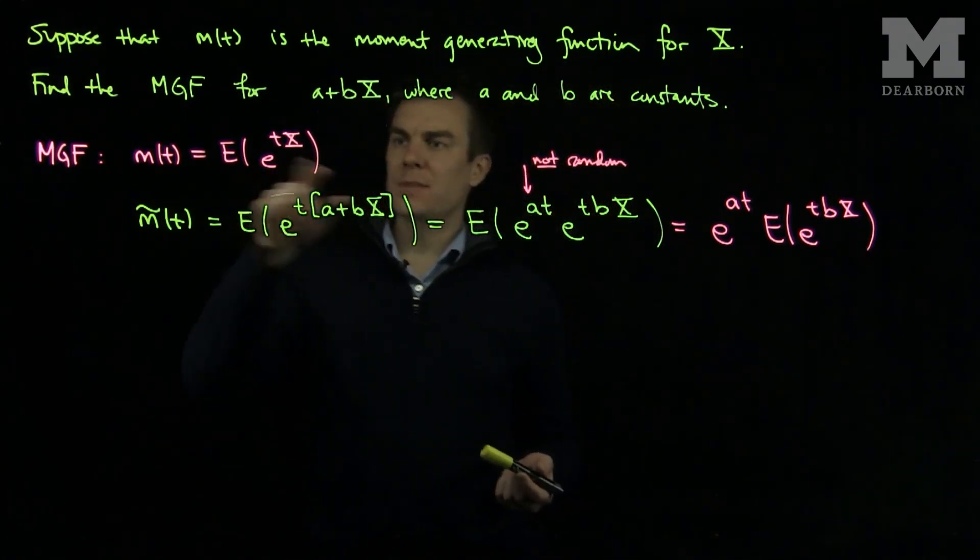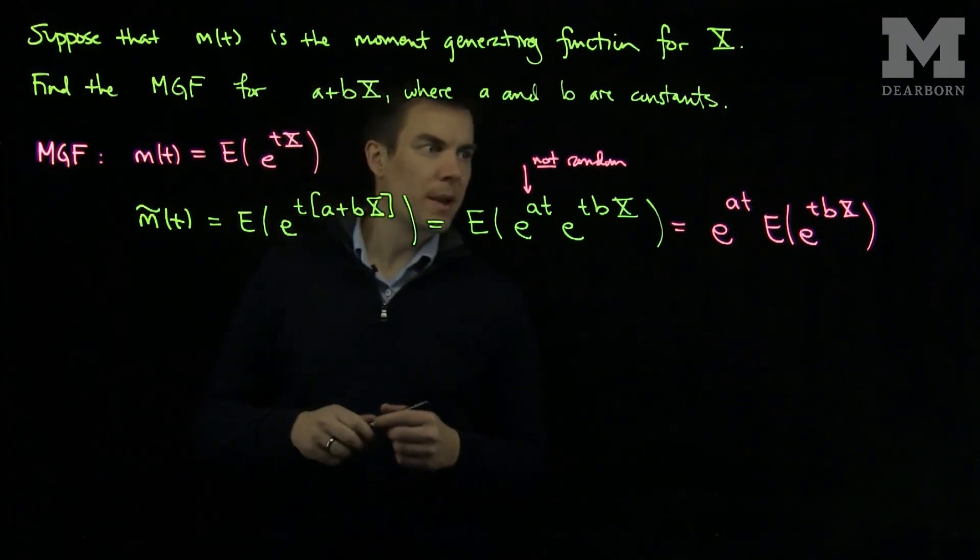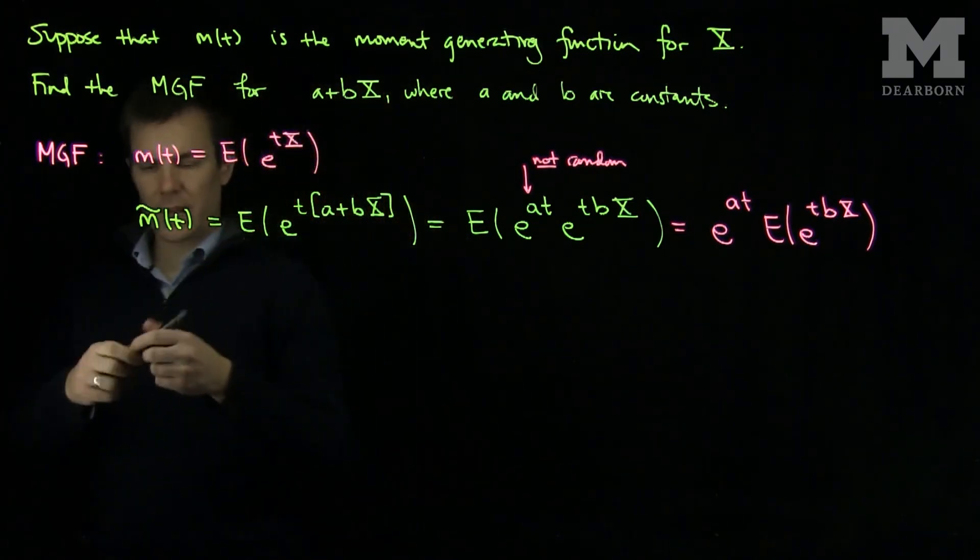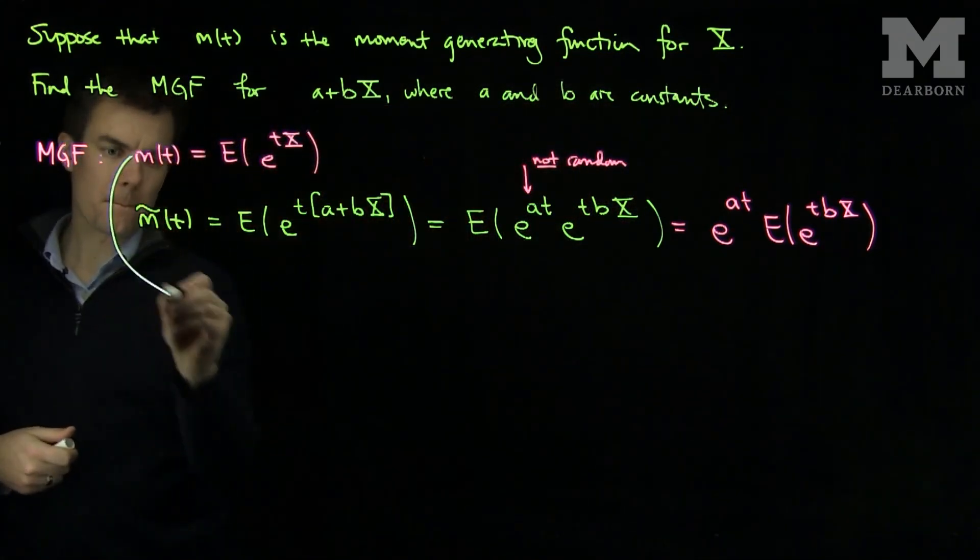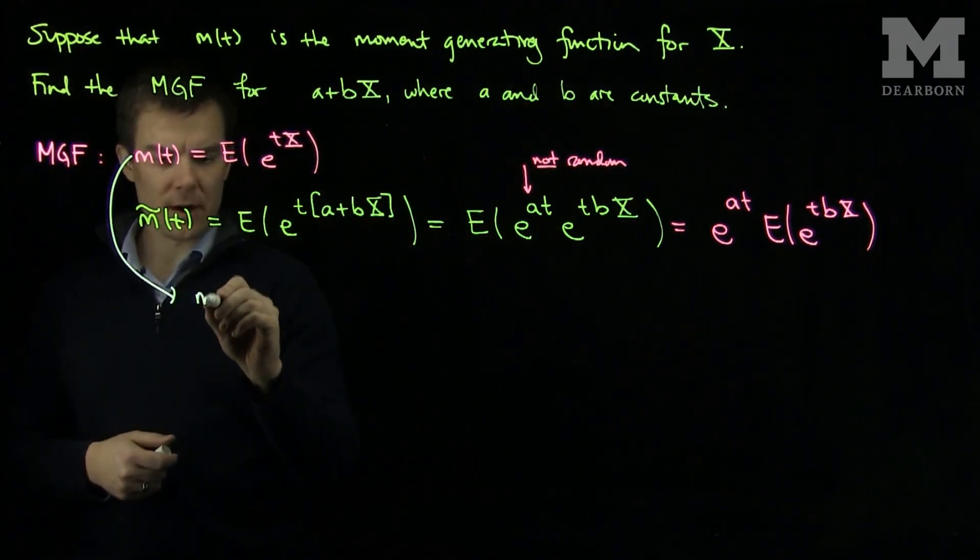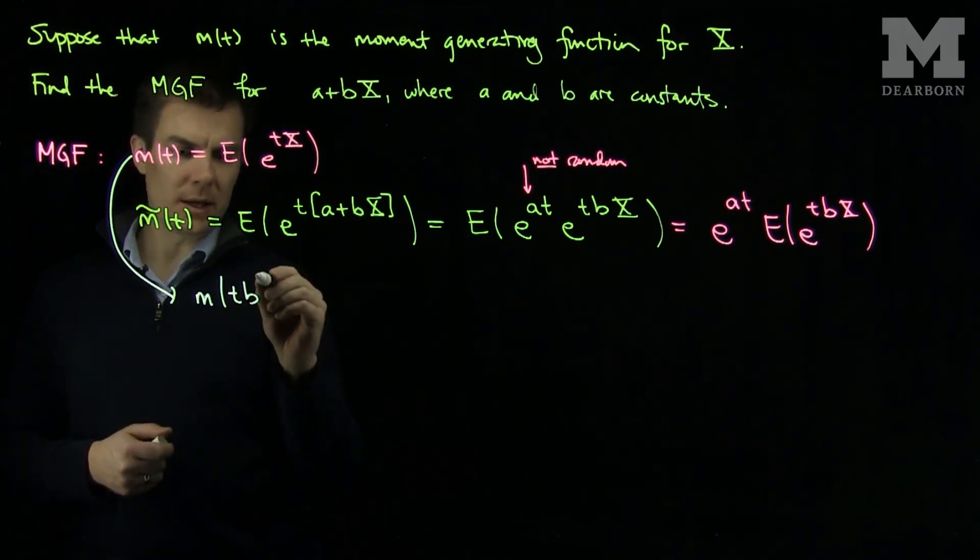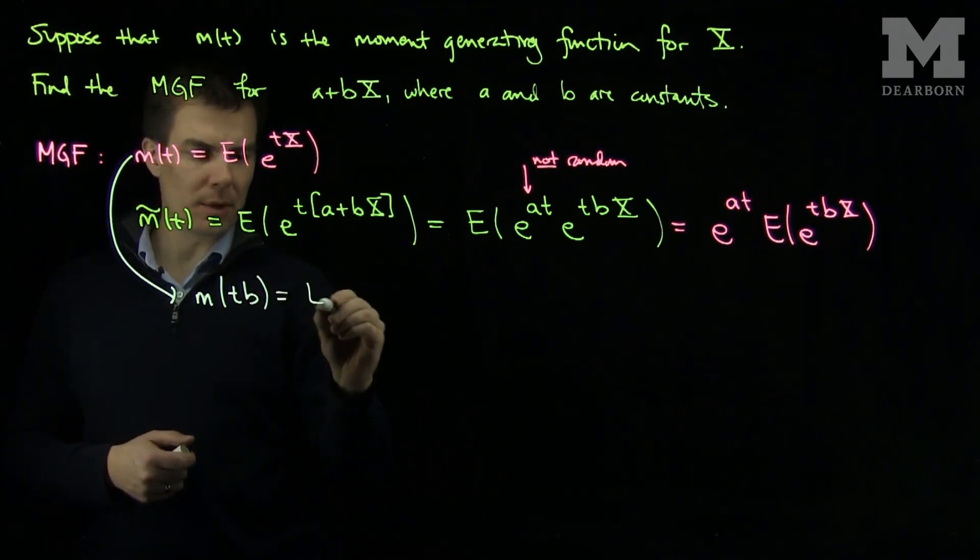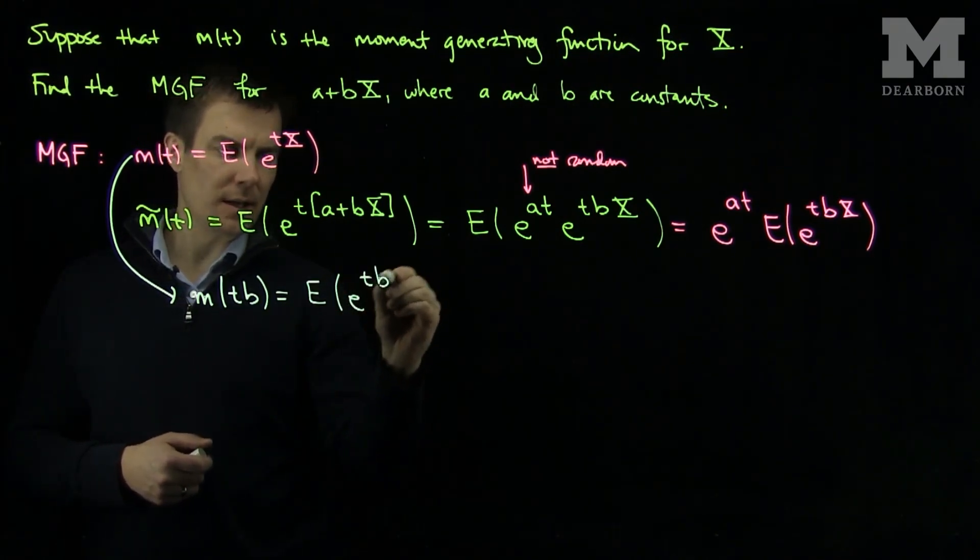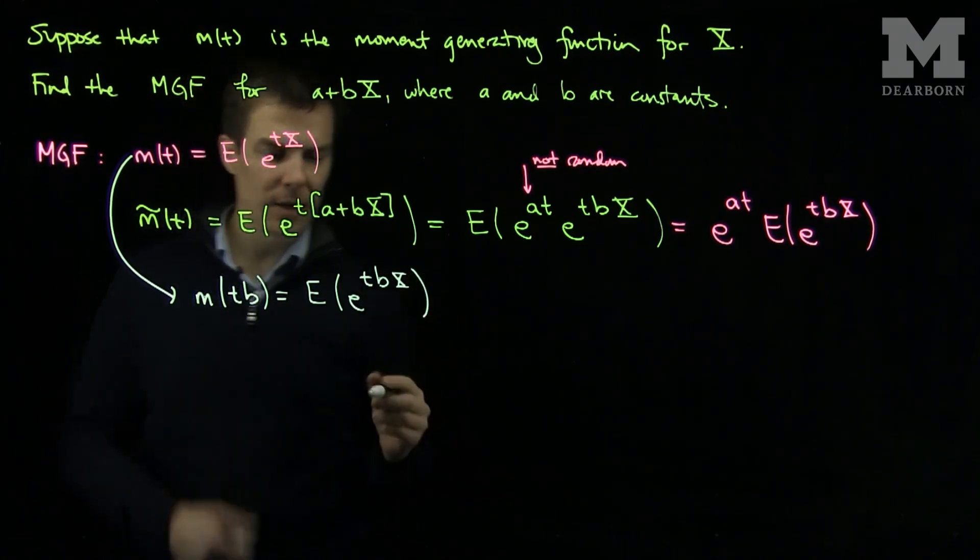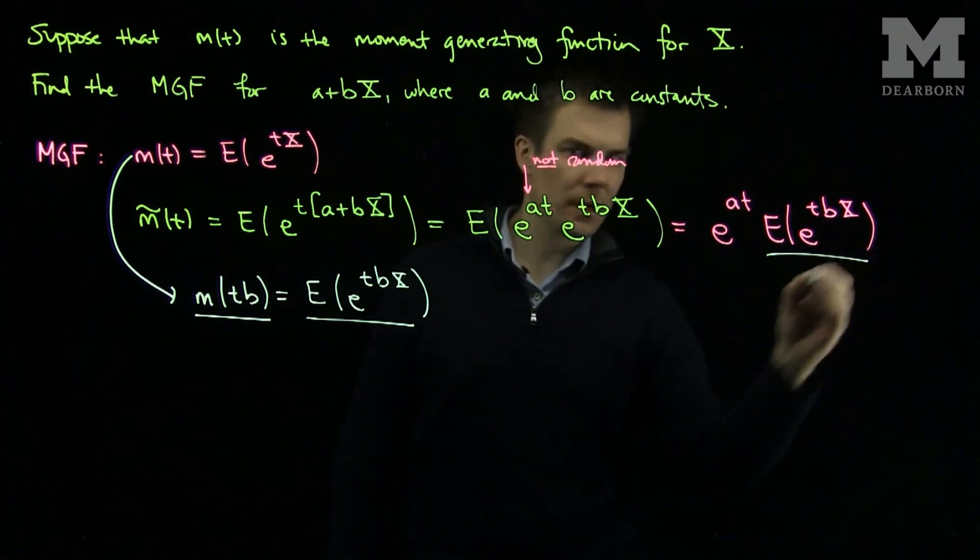We know that the expected value of e to the tX is m of t, so we can make the substitution now. Note, if we take this equation over here, if I consider m of tb, m of tb will be the expected value of e to the tbX. And so we see that m of t times b is this expected value, which is right over here.